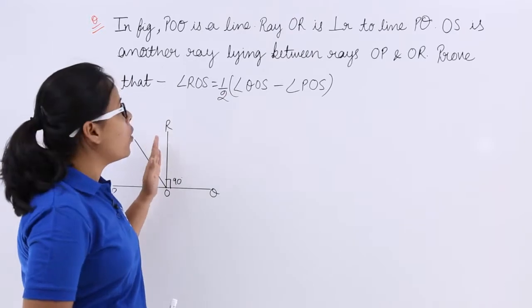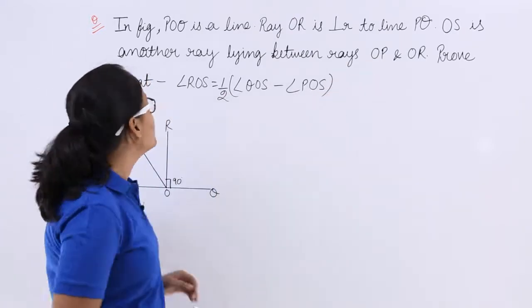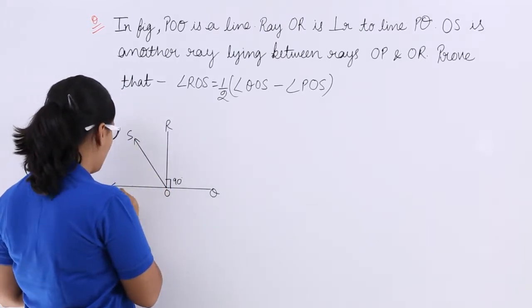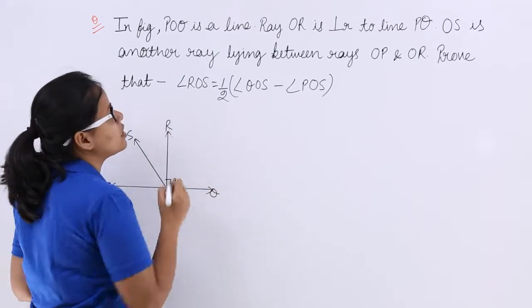Ray OR, this is ray OR which is perpendicular to POQ, and OS is another ray. This is a line here and this is perpendicular.